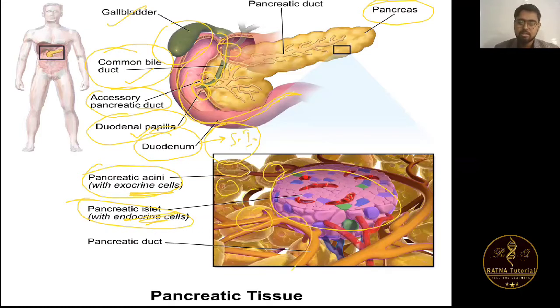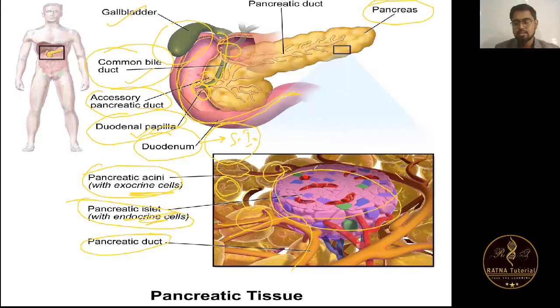These are the pancreatic ducts, and these are the pancreatic acini, and this is known as the Islets of Langerhans.